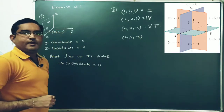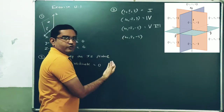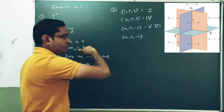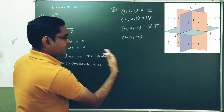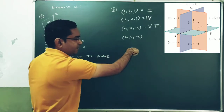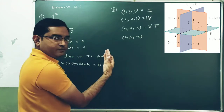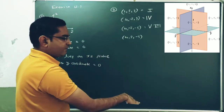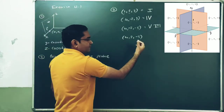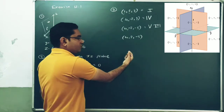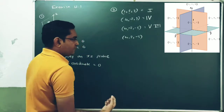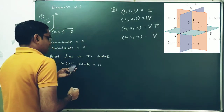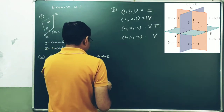Next point: (4, 2, -5). X coordinate is positive — front direction. Y is positive — rightward direction. Z is negative — downward direction. Front, right, and downward corresponds to octant number 5. So the point (4, 2, -5) lies in the fifth octant.